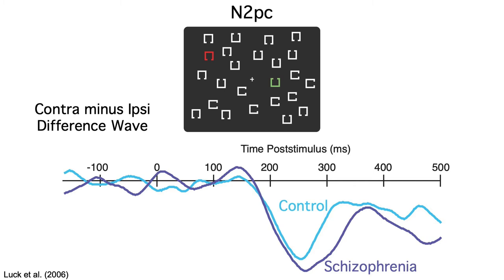That's enough about the N2PC for now. There's an analogous component in the motor domain called the lateralized readiness potential, or LRP. You get it in tasks where you need to make either a left-hand or right-hand response depending on what stimulus you see.